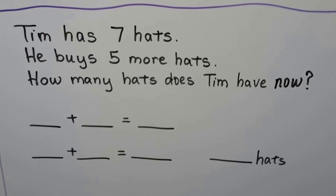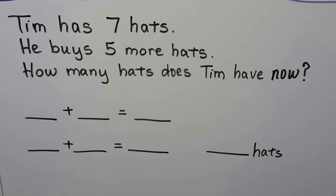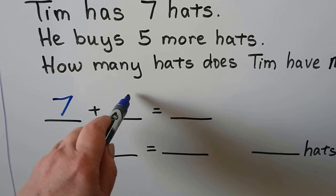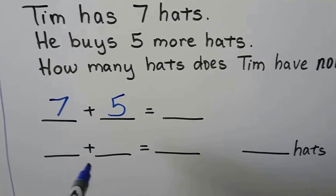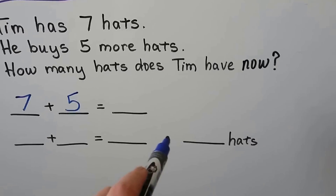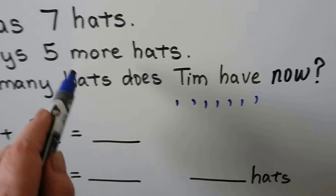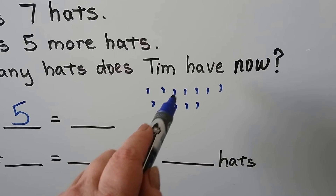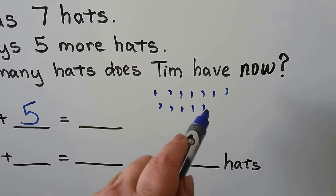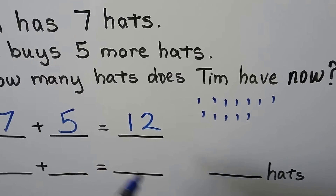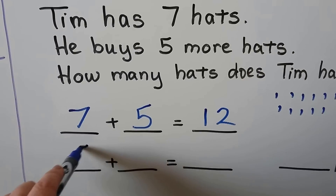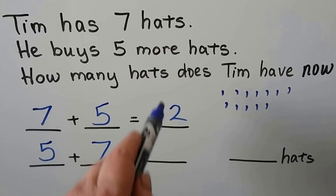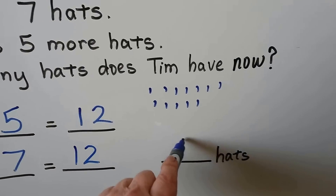Tim has 7 hats. He buys 5 more hats. How many hats does Tim have now? He had 7 hats and he buys 5 more. That word 'more' tells us it's addition. 7 plus 5 — we can use counters: 1, 2, 3, 4, 5, 6, 7, and he buys 5 more — 1, 2, 3, 4, 5. We can count them all: 1, 2, 3, 4, 5, 6, 7, 8, 9, 10, 11, 12 — 12 in all. We can change the order and put the 5 first then the 7 — we haven't taken any counters away or added more. It's the same. It's 12. He has 12 hats now.